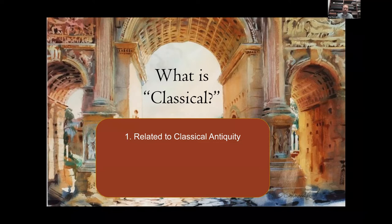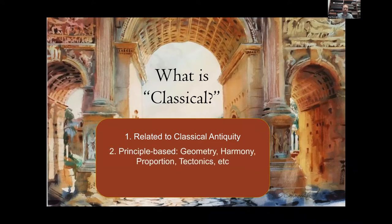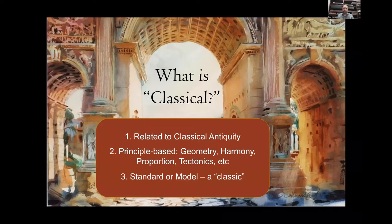We might argue that Classical is deeper than that. I would push back on someone who calls their building Classical but is just using Corinthian columns, pasting them on in a superficial or lazy way. Another layer to the definition includes a set of principles: geometry, harmony, proportion, tectonics — a structural logic — and we could add durability, ornament, craftsmanship. The last definition I'll propose is that something can be widely accepted as a standard of excellence — it's timeless. Classical, I would argue, is a big umbrella that includes much more than ancient buildings.